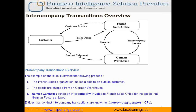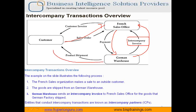Here is an easy example to understand. A customer places an order to the French office. The French sales office in turn passes the order to the German warehouse, and the German warehouse ships the order back to the French sales office. The French sales office makes the payment and the German warehouse renders the intercompany invoice. The product shipment is done from the warehouse to the customer, and finally a customer invoice is generated by the French sales office.